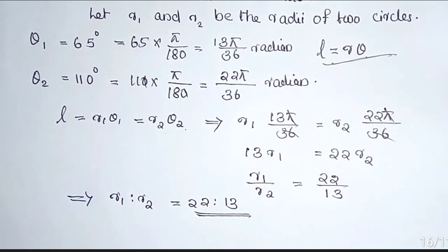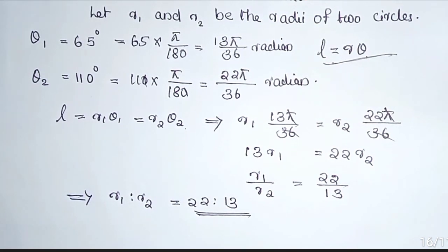Ratio of their radii equals 22:13. Thus we complete these examples. And in the next section is exercise 3.1. That we will discuss in the next part. Thank you.